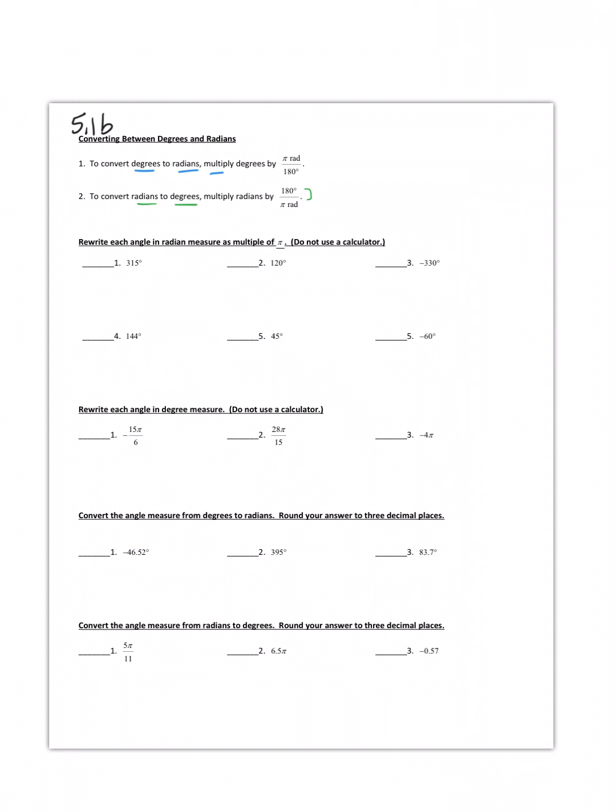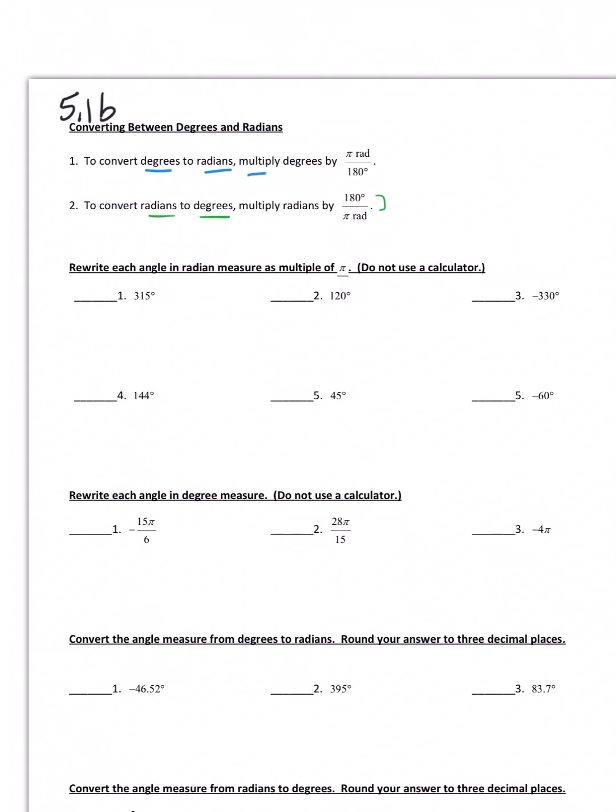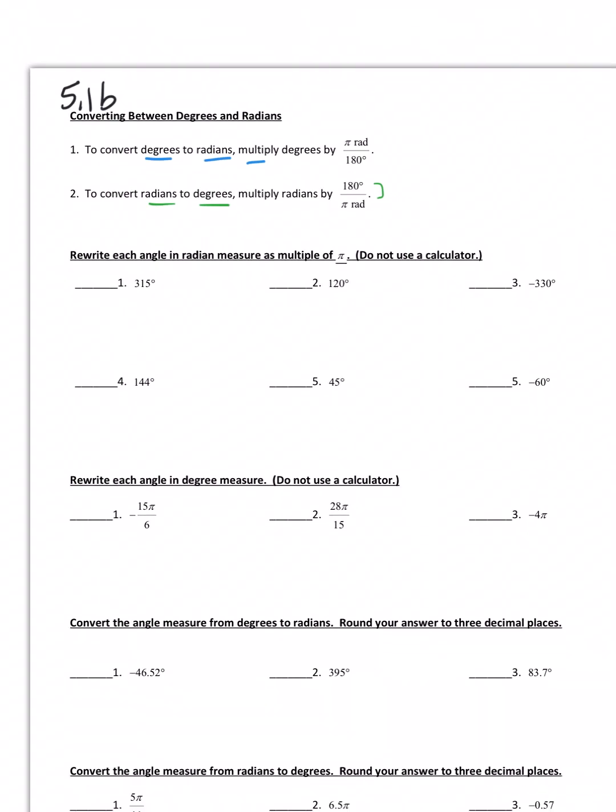Now I know the directions say do not use a calculator, but some of these you're going to want to and that's fine. So rewrite each angle in radian measure as a multiple of pi. If it's degrees, I'm going to multiply by pi over 180. Now 315 over 180 pi is a gross fraction, right? We need to reduce that. So let's just use our calculator to reduce that fraction.